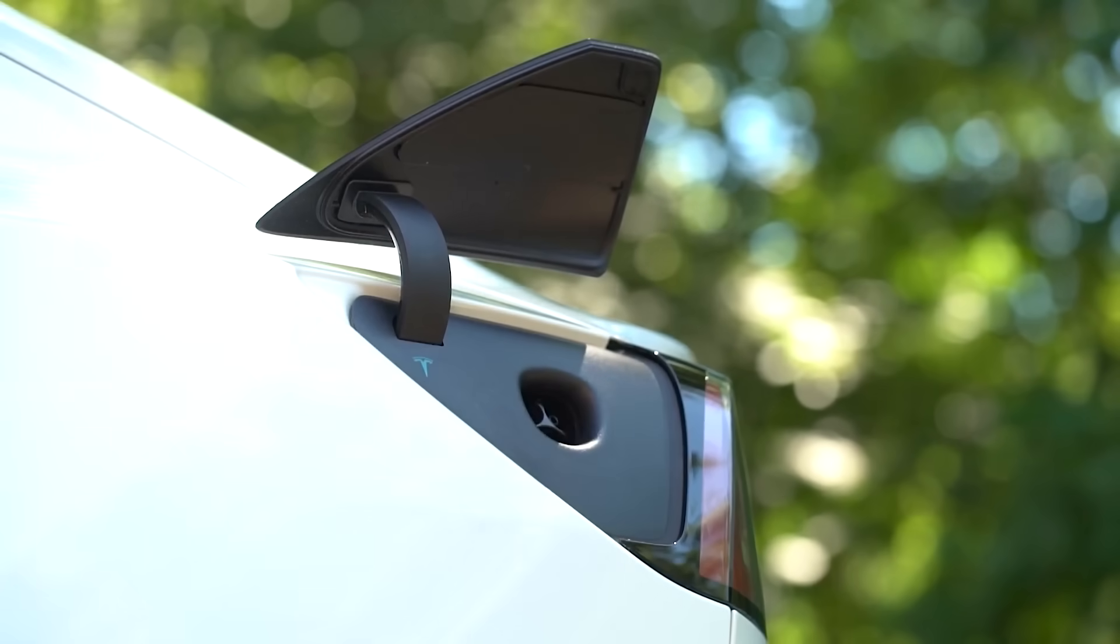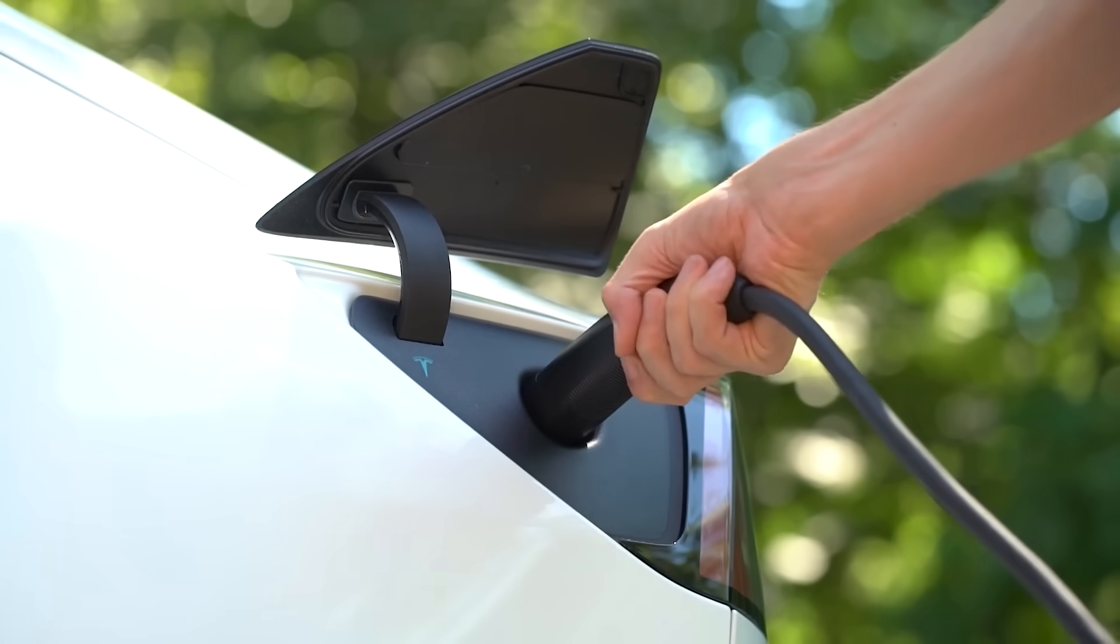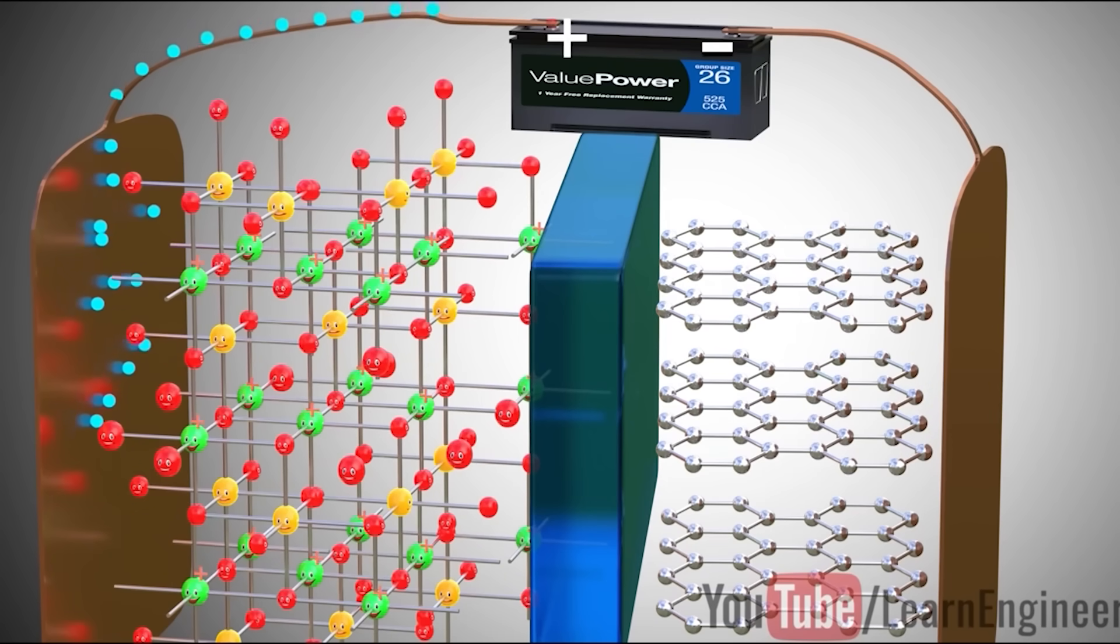When your car discharges the battery, both electrons and positively charged molecules, that is, the lithium ions, flow from the anode to the cathode, which stores both until you plug in the battery to charge again.